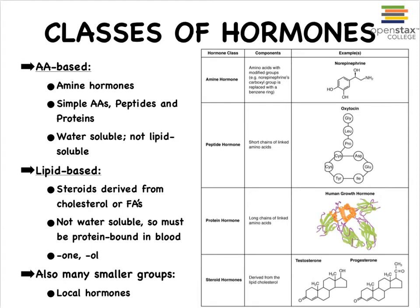In this table, we see some examples of simple amino acid-based hormones to more complex ones. Here we have an amine hormone such as norepinephrine, which is really an amino acid with some functional groups added or replaced. Here we have a peptide hormone made up of just a few amino acids, such as oxytocin, produced by our posterior pituitary gland. Many of our hormones are proteins, such as human growth hormone, made up of lengthy chains of amino acids twisted into a tertiary structure.